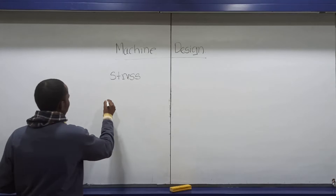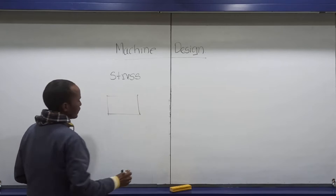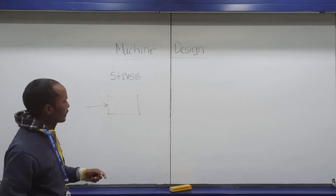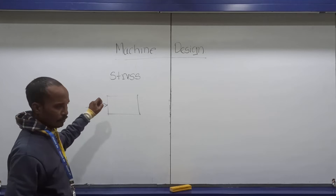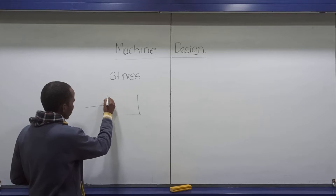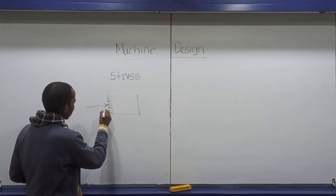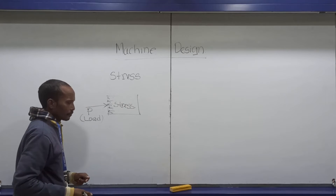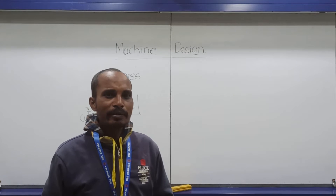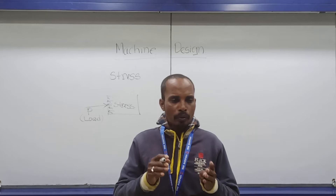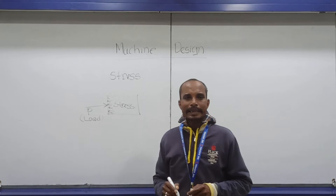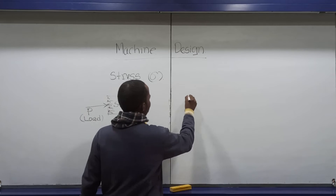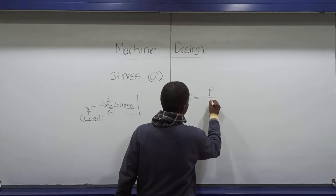Suppose this is a body and a load is applied in this direction — suppose this type of load is compressive in nature. So this load tends to make some stresses. That is your P, that means load. And the stress is created in this way. Mathematically, stress is the force per unit area. Stress is denoted by the Greek letter sigma. So mathematically, sigma is equal to P by A.